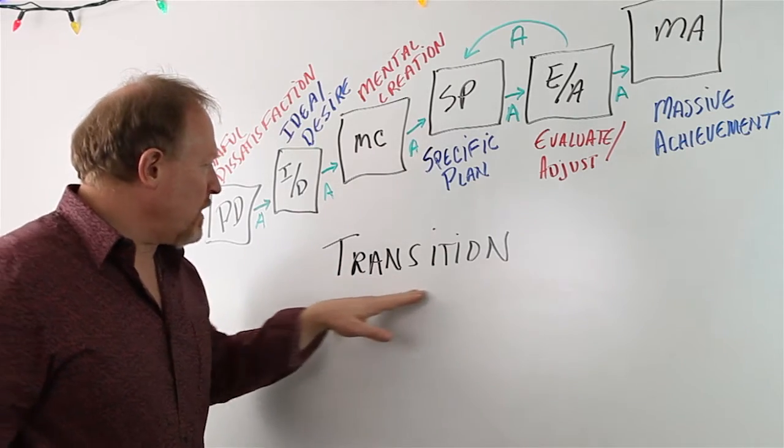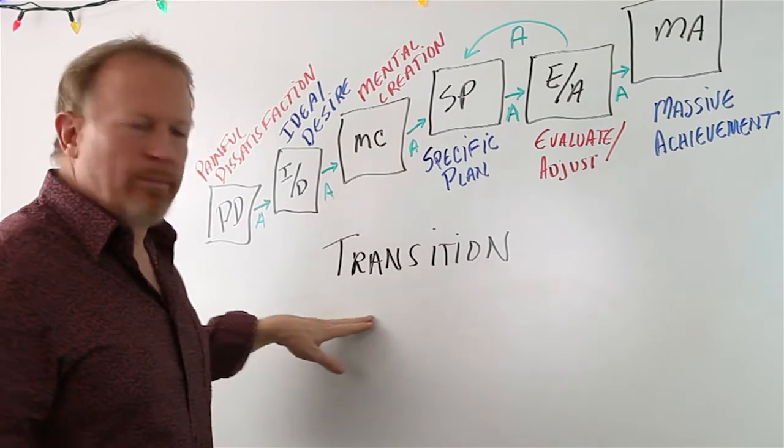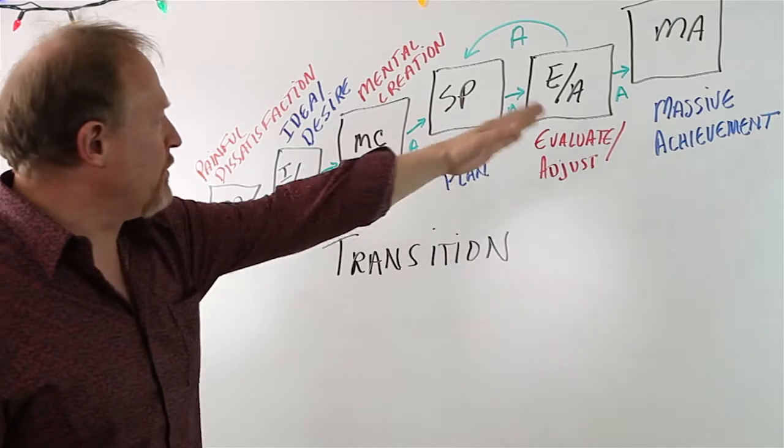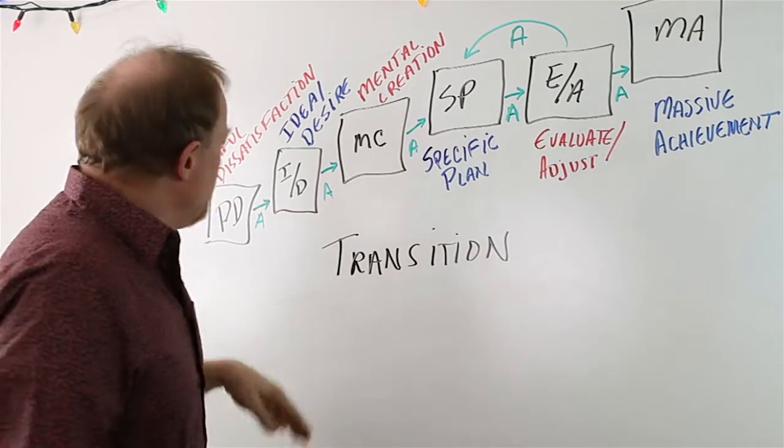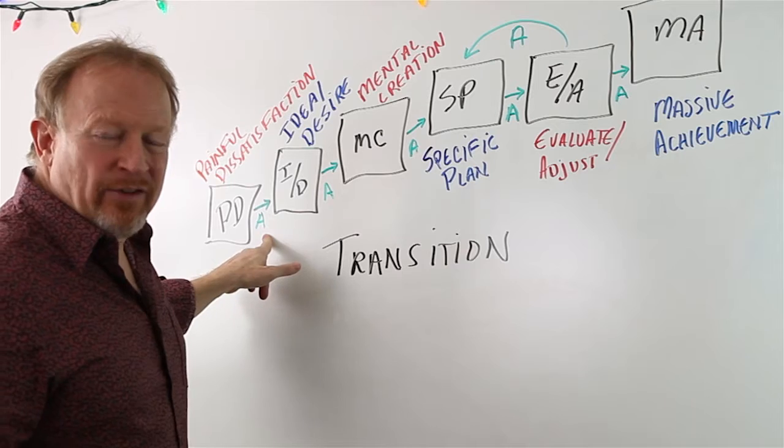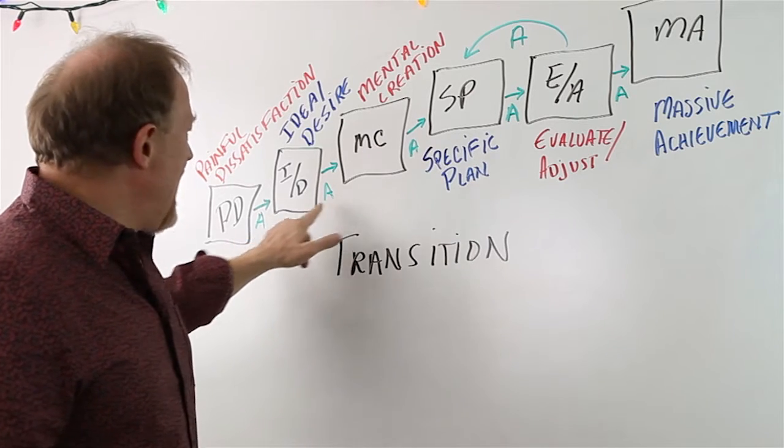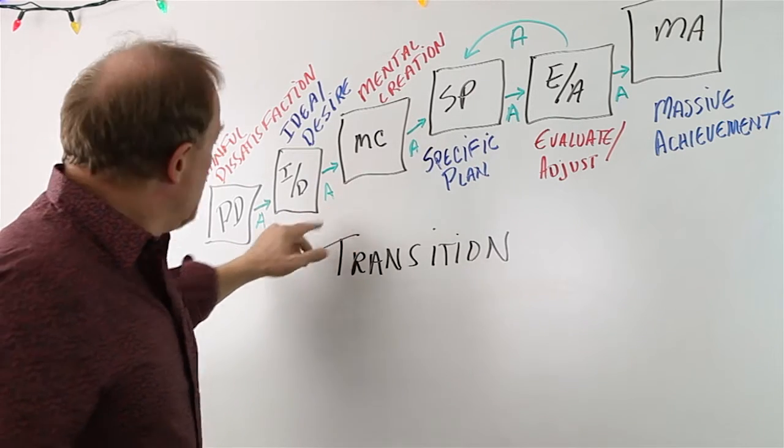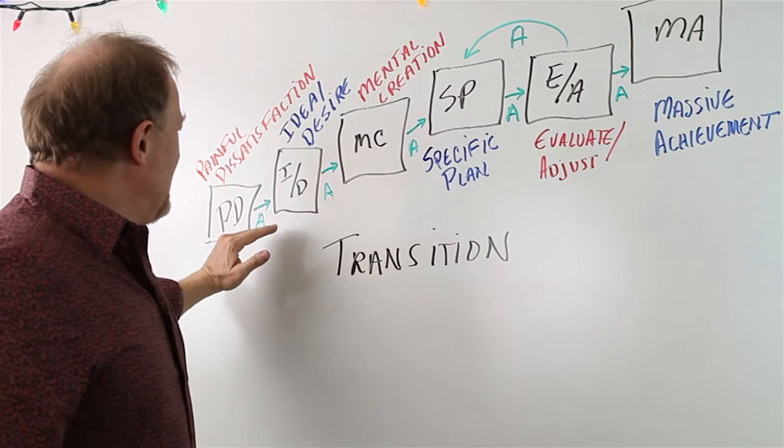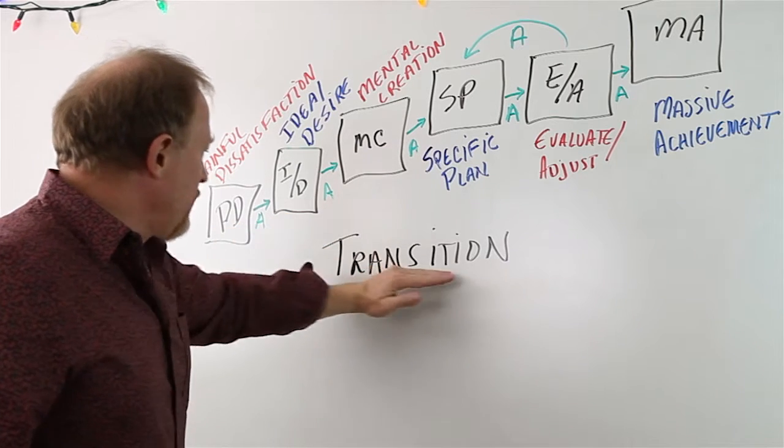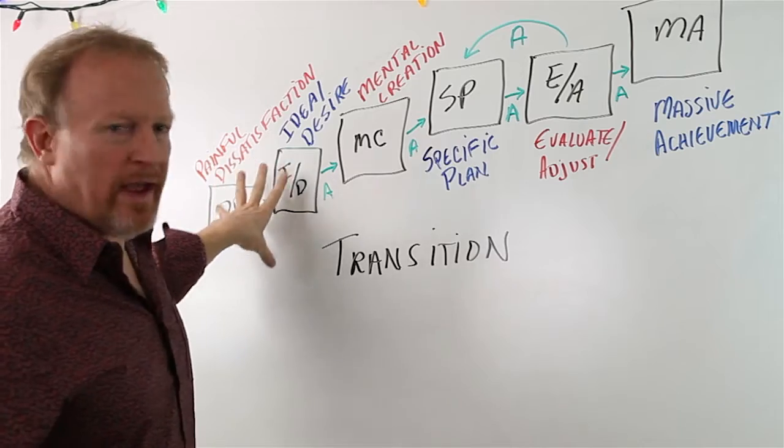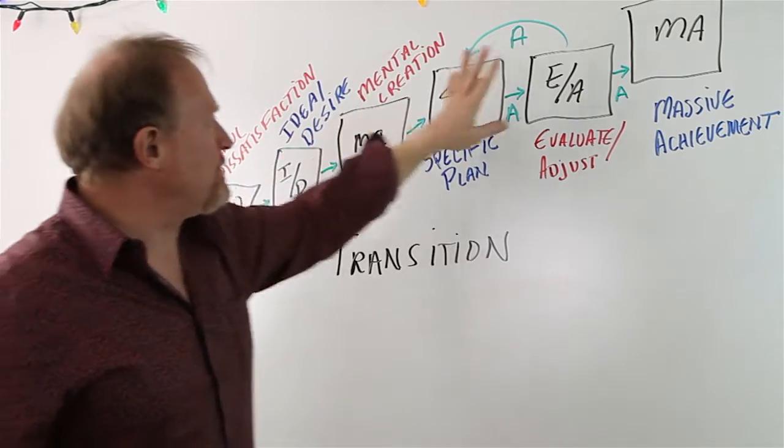In this video, I want to talk about transition, which is a process that's repeated over and over again to move between steps. I've represented the transition with an A, which stands for action, and the green arrow. So it takes a transition to move from the state of painful dissatisfaction to the next step up the staircase.